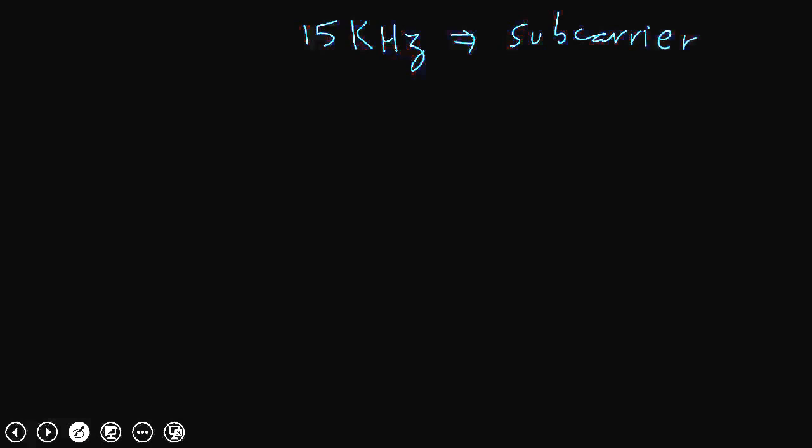When it comes to allocation, it has been decided that 12 subcarriers can be allocated to a user. So if I'm allocating 12 subcarriers, each subcarrier is 15 kilohertz, then it will turn out to be 180 kilohertz. And this 180 kilohertz is also termed as a resource block in LTE.